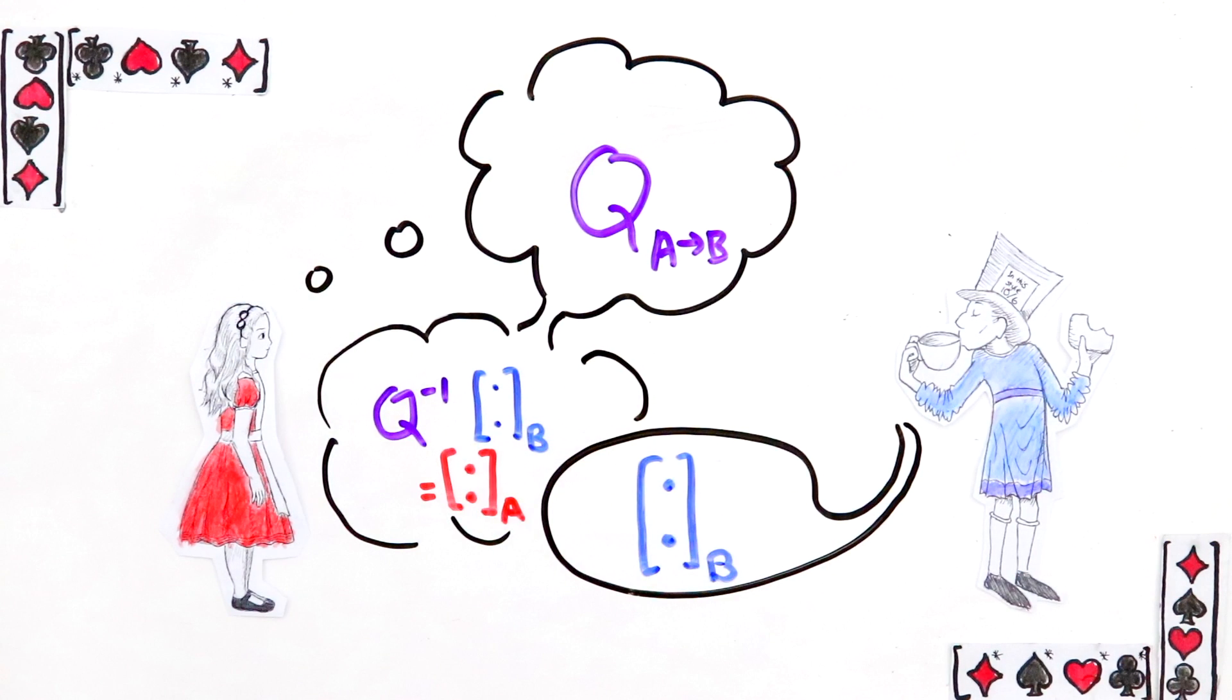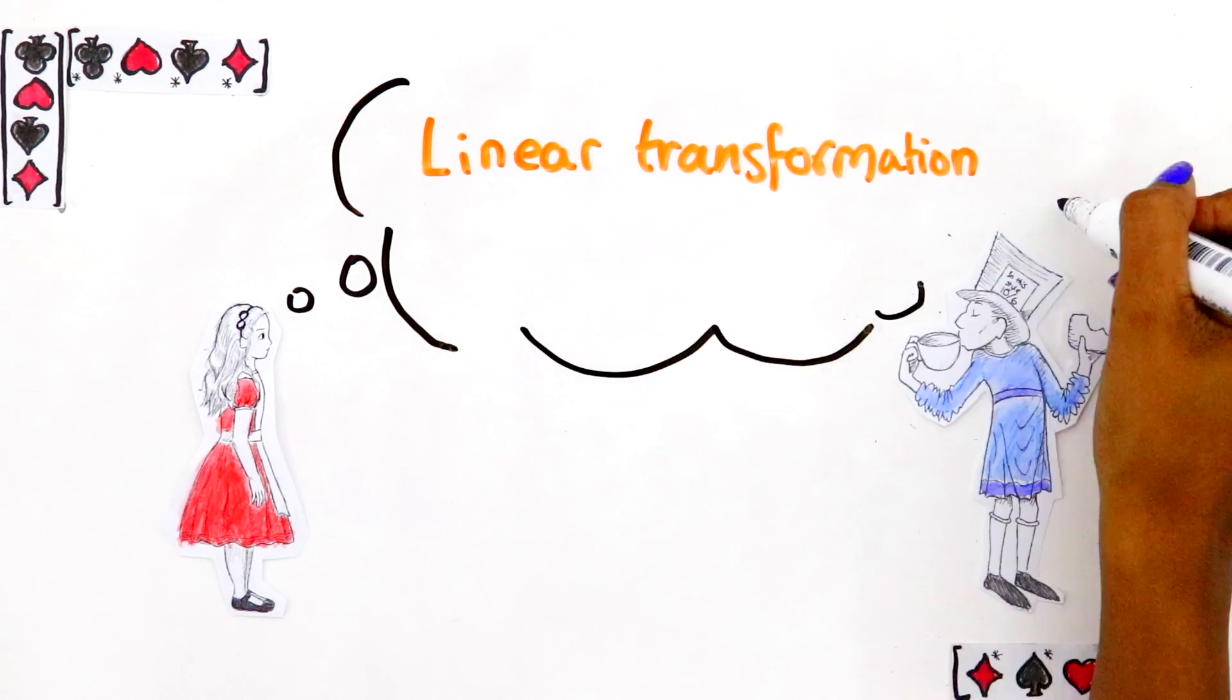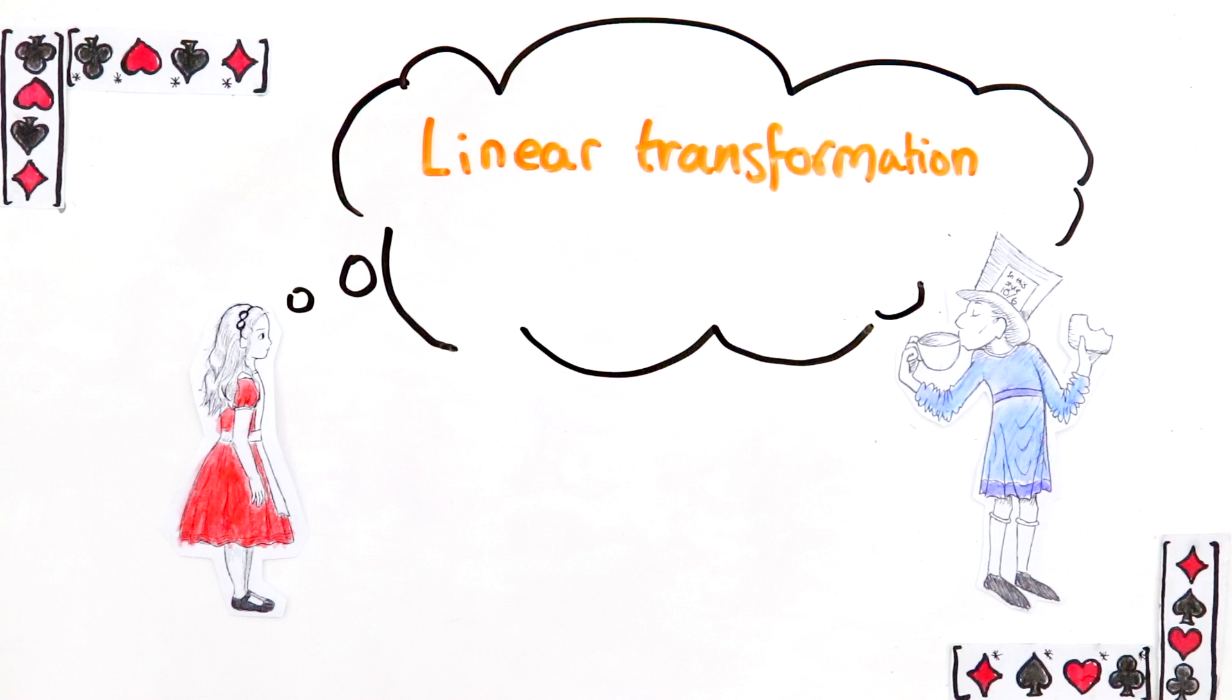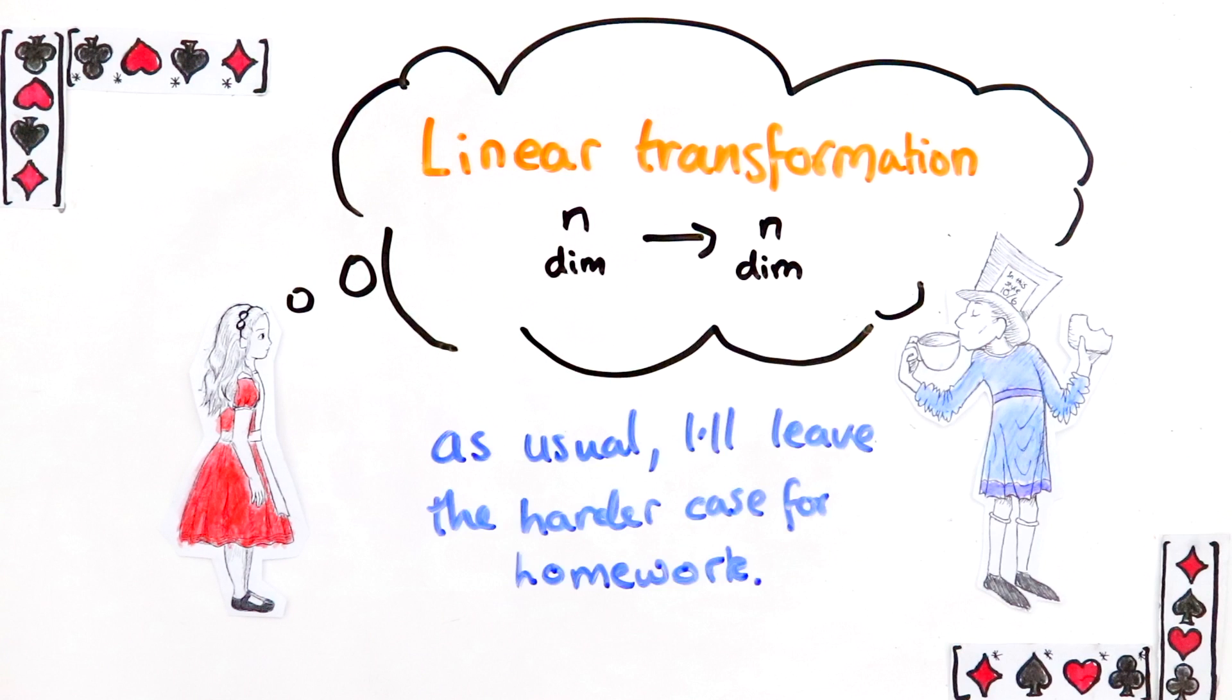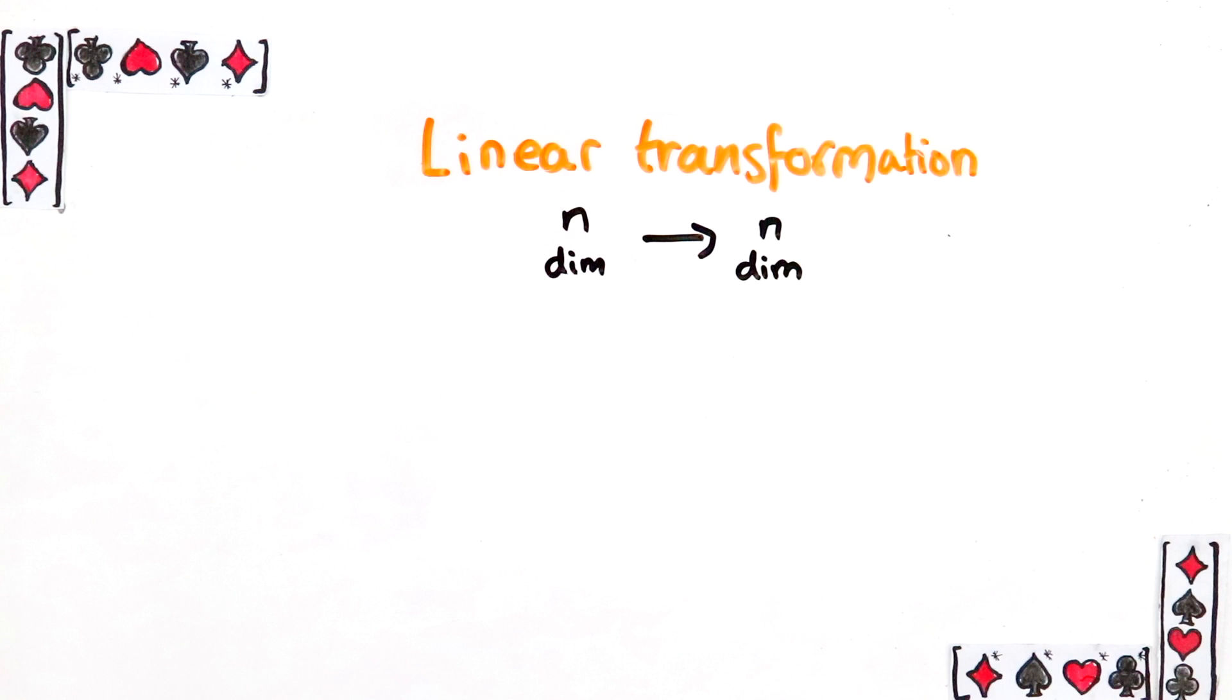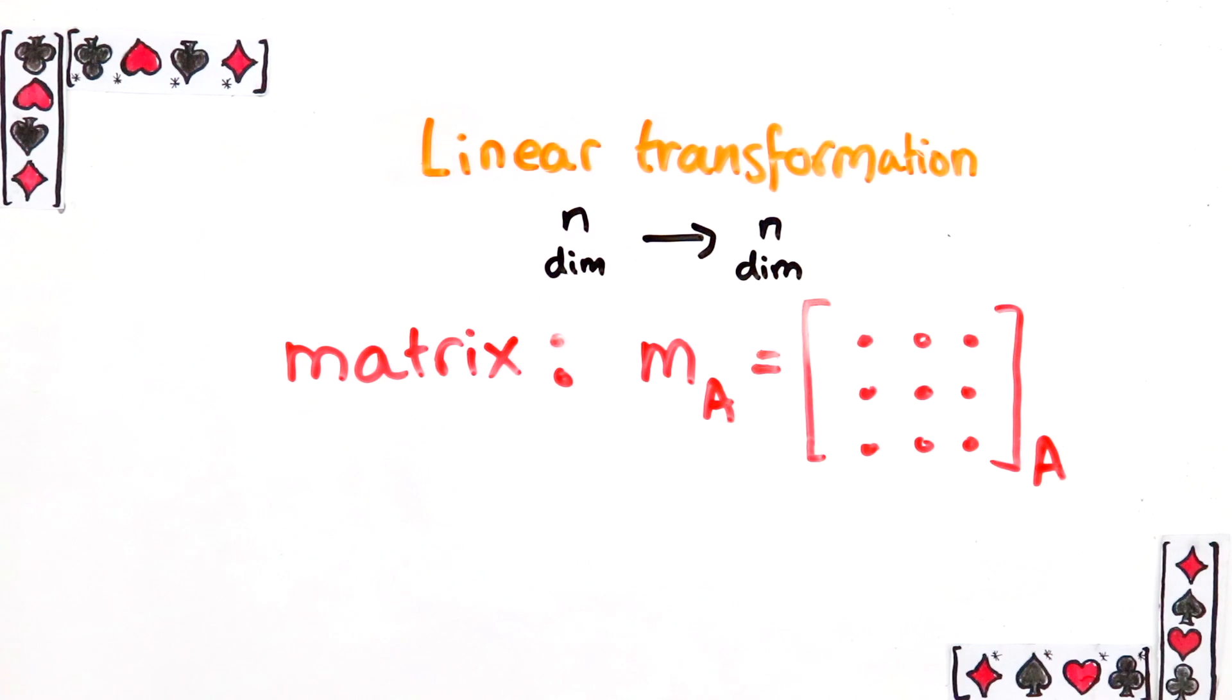There's another reason that these two matrices are super useful. If Alice now wants to describe a whole linear transformation to Bob, not just a vector, she can use Q and Q inverse to do it. Let's see how this works for the case when the linear transformation is from n dimensions to n dimensions. The easiest way to describe a linear transformation is to write it as a matrix. But the problem is, the way the matrix looks depends on what basis you've used. This is what hers looks like in her basis. Now she needs to translate it to Bob's basis, which means it will look very different from her own. Here's how.